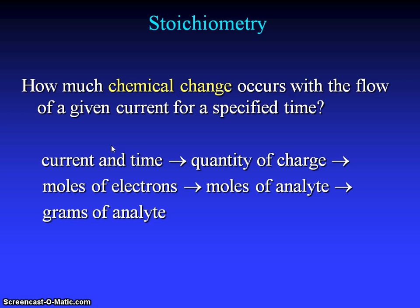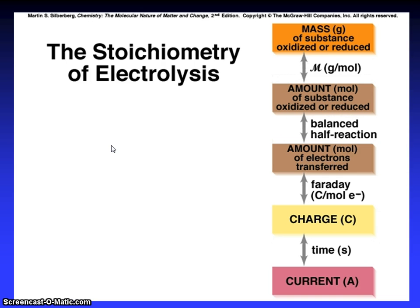Friends, stoichiometry: how much chemical change occurs with the flow of given current for a specific time? Current and time, quantity of charge, moles of electrons, moles of analyte, and grams of analyte. Stoichiometry of electrolysis. Mass of substance oxidized or reduced. Grams per mole, amount, moles of substance oxidized or reduced. Balanced half-reaction, amount, moles of electrons transferred. Faraday constant, coulombs per mole electrons. Charge, time, and then current. Just keep in your mind, please follow.